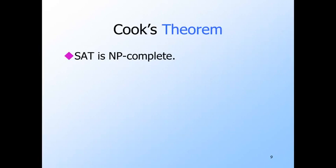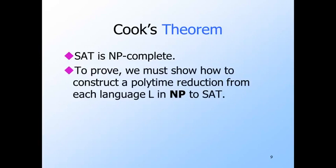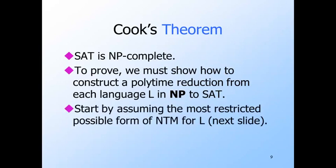We're now going to give the proof of Cook's theorem — that the SAT problem is NP-complete. Since we don't have any NP-complete problems yet, we can't do a reduction from some other problem to SAT. Rather, we have to show how to reduce any problem in NP to SAT in polynomial time. We do these reductions by assuming nothing about the problem L that is in NP, except that it has some non-deterministic polynomial time bounded Turing machine that accepts L. Every problem in NP has one of these machines.